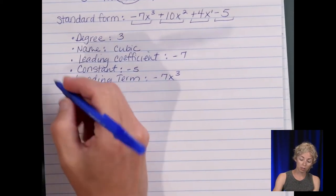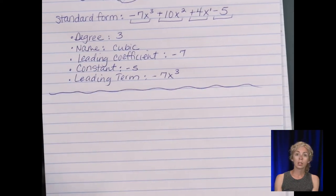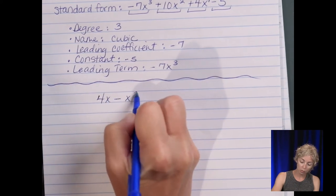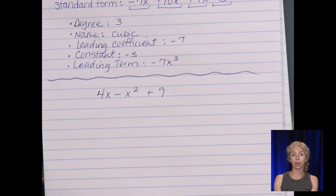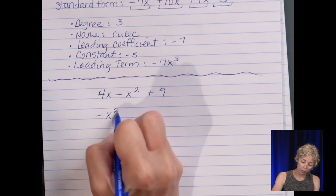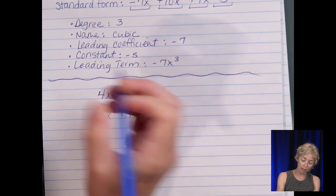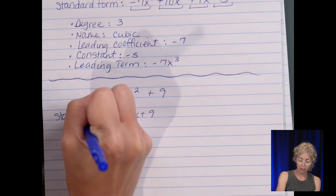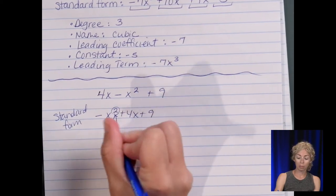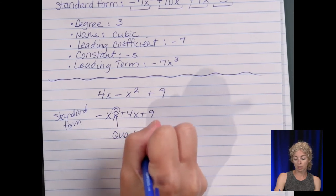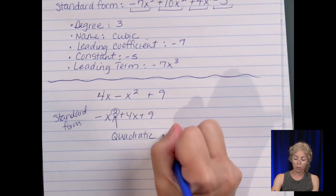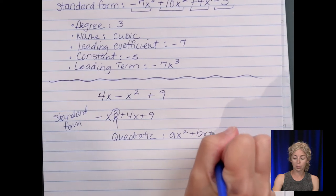So now let's look at another example. Let's make one up. Let's say four x minus x squared plus nine. So in standard form that would be negative x squared plus four x plus nine. Remember because it's degree two that means it's going to be the quadratic.